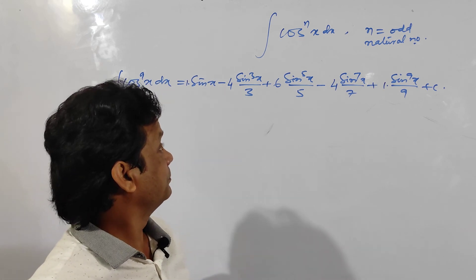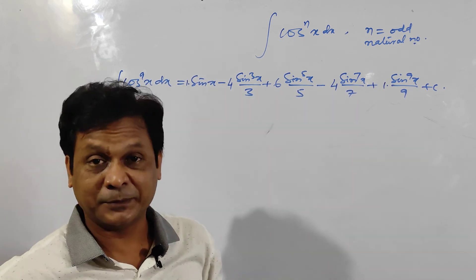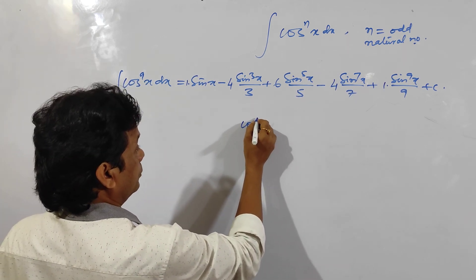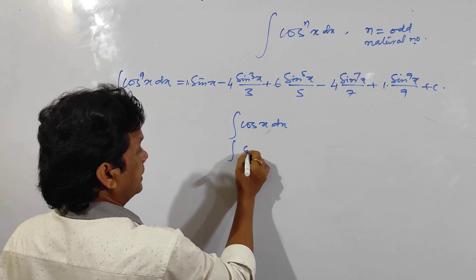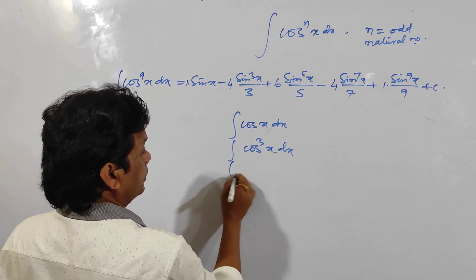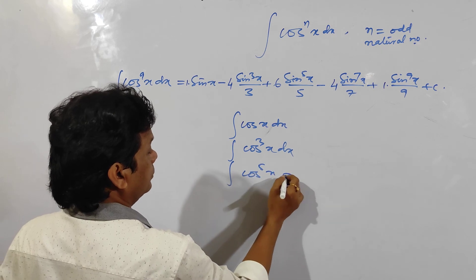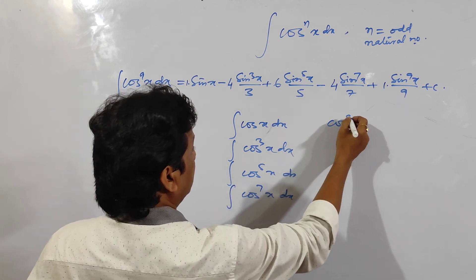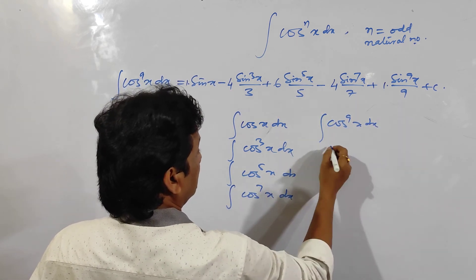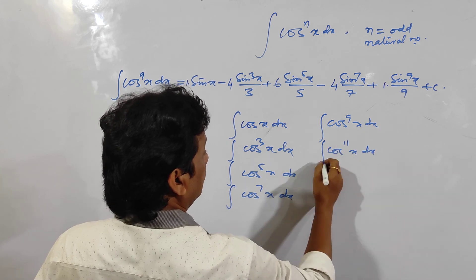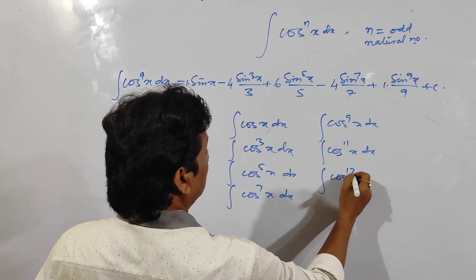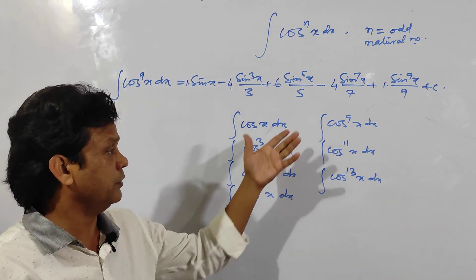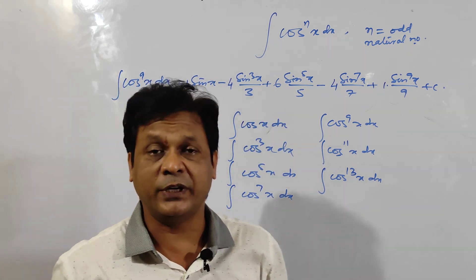I hope you are enjoying this trick. Do these practice problems: integration of cos x, cos cube x, cos^5 x, and then by this trick do cos^7 x, cos^9 x, cos^11 x, up to cos^13 x. If you do all of these, you can remember the trick very easily.